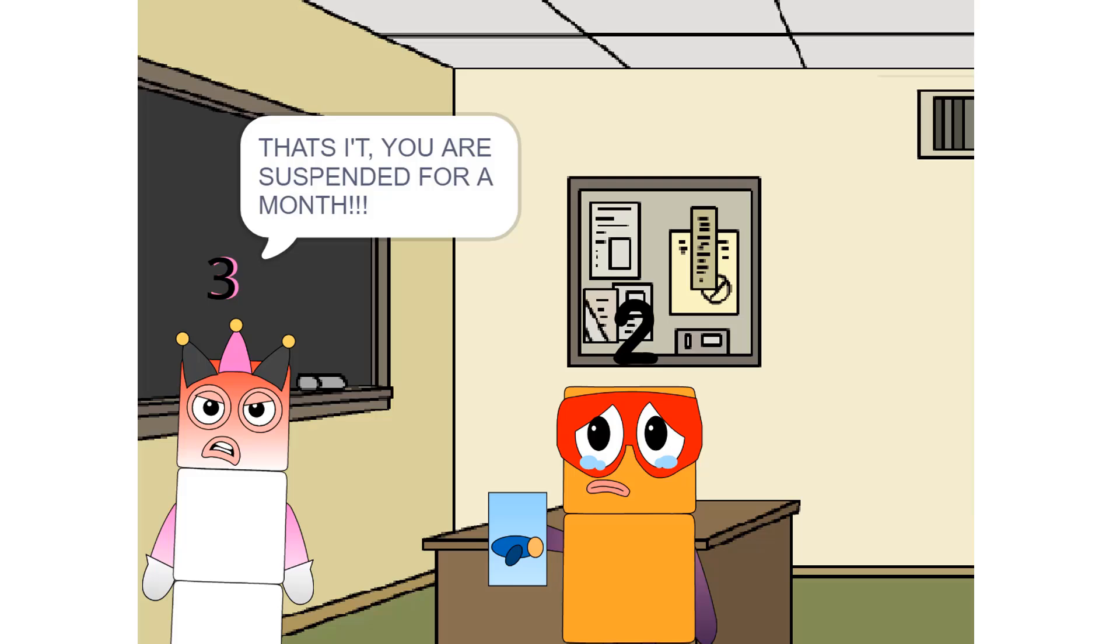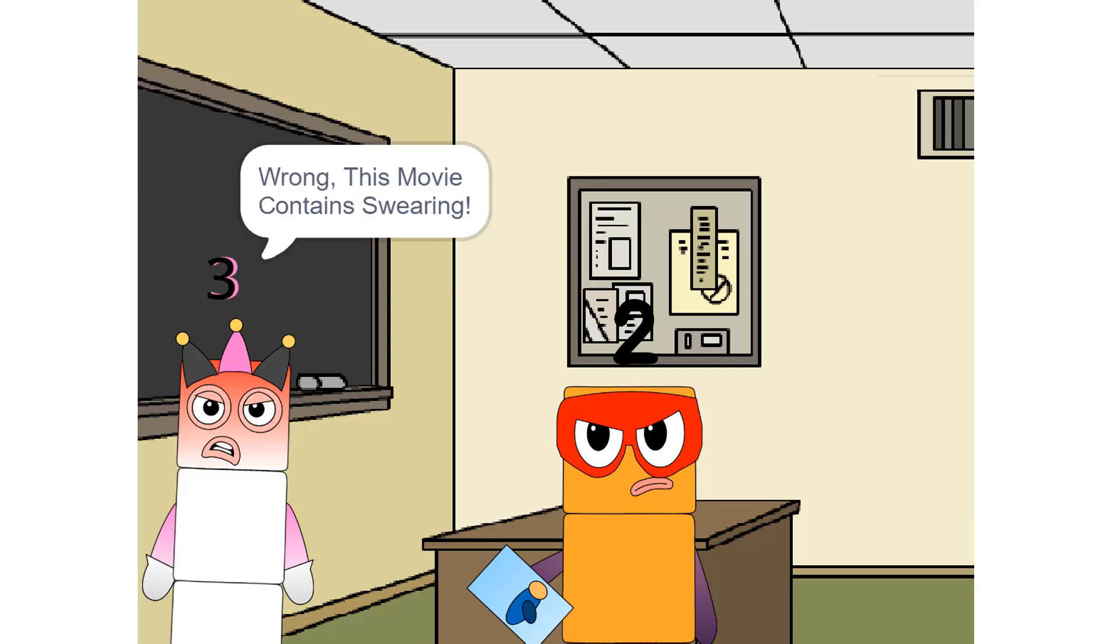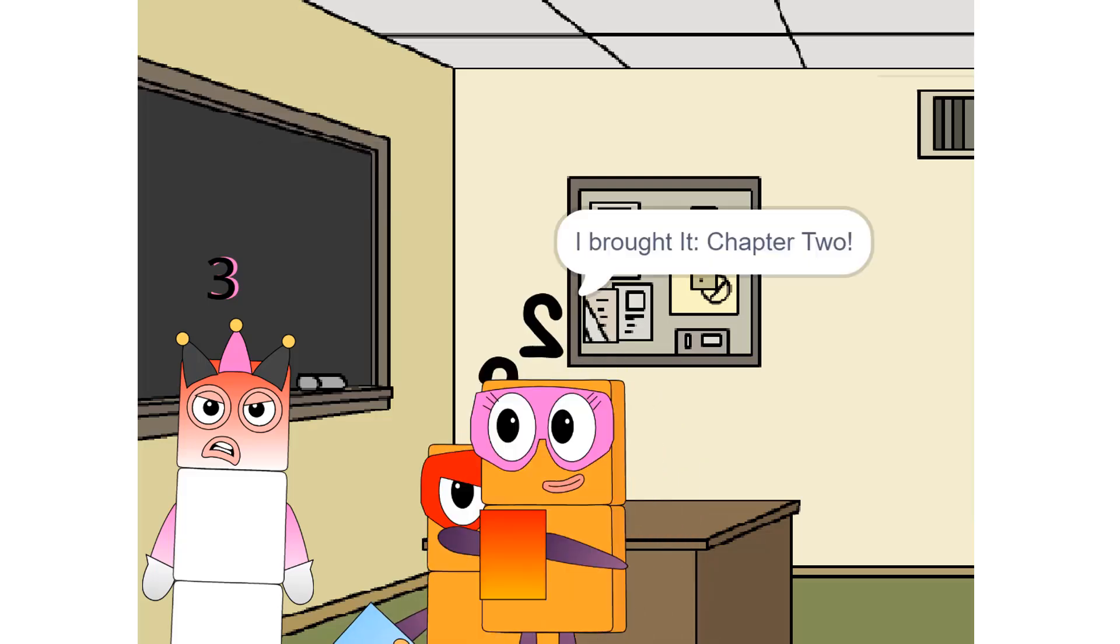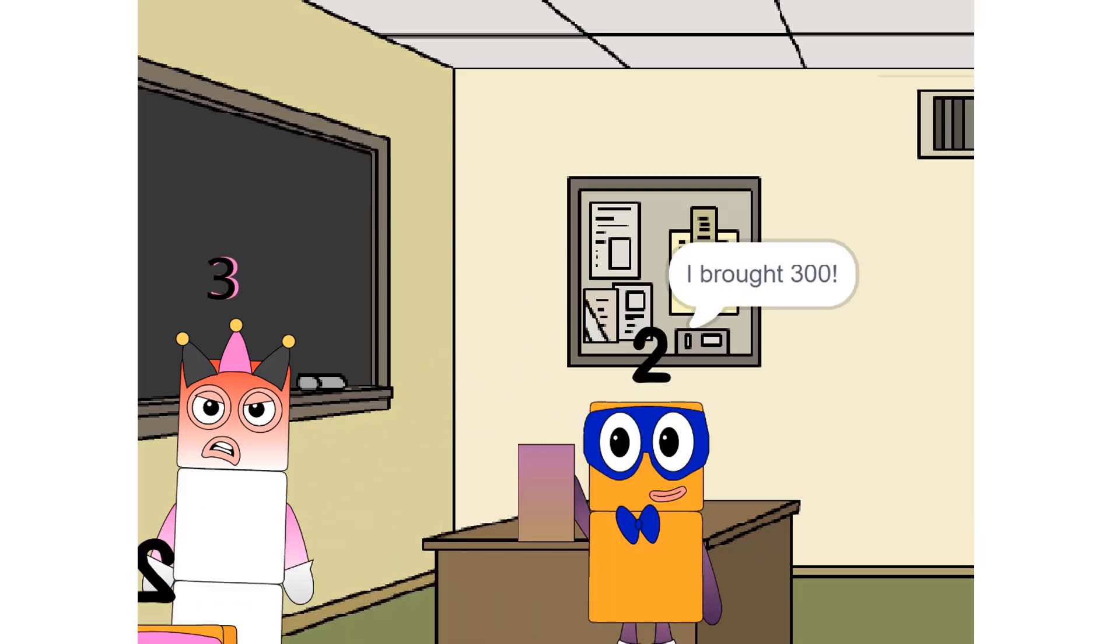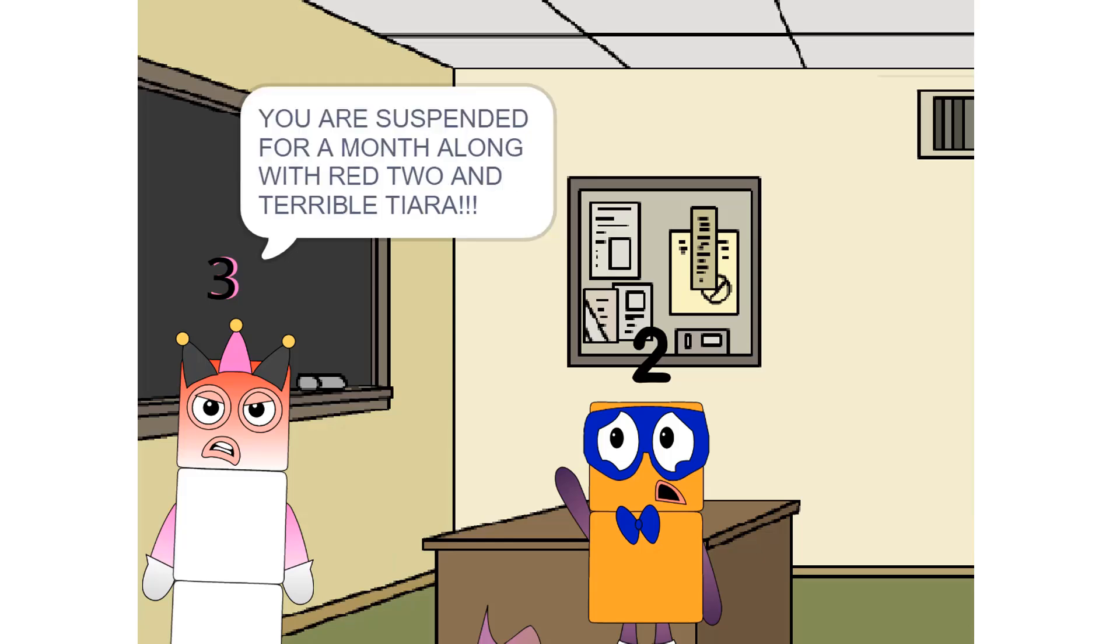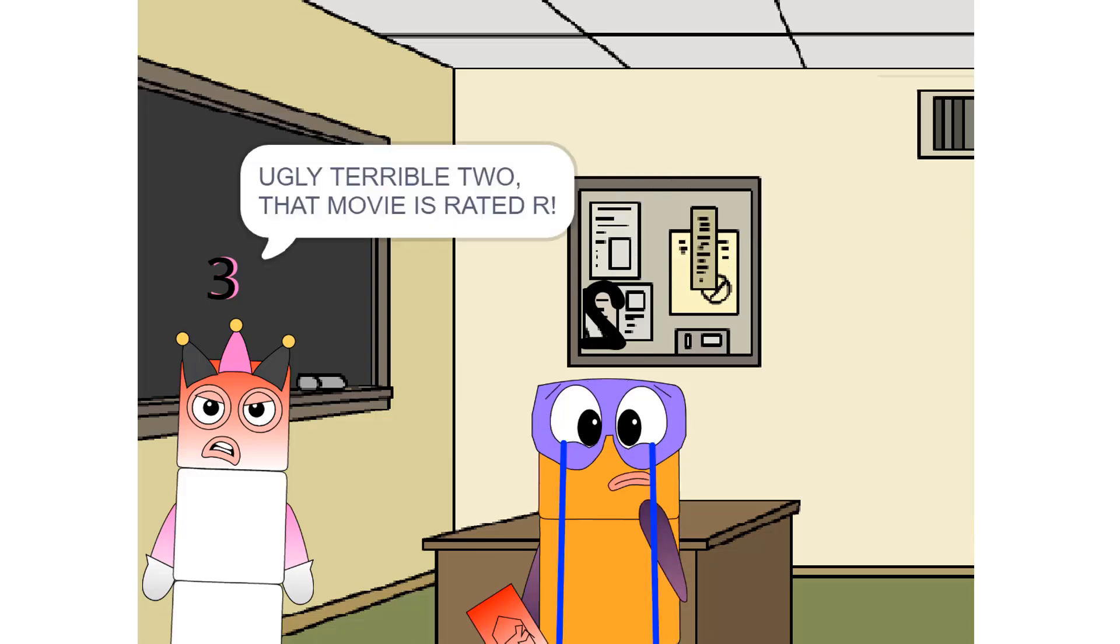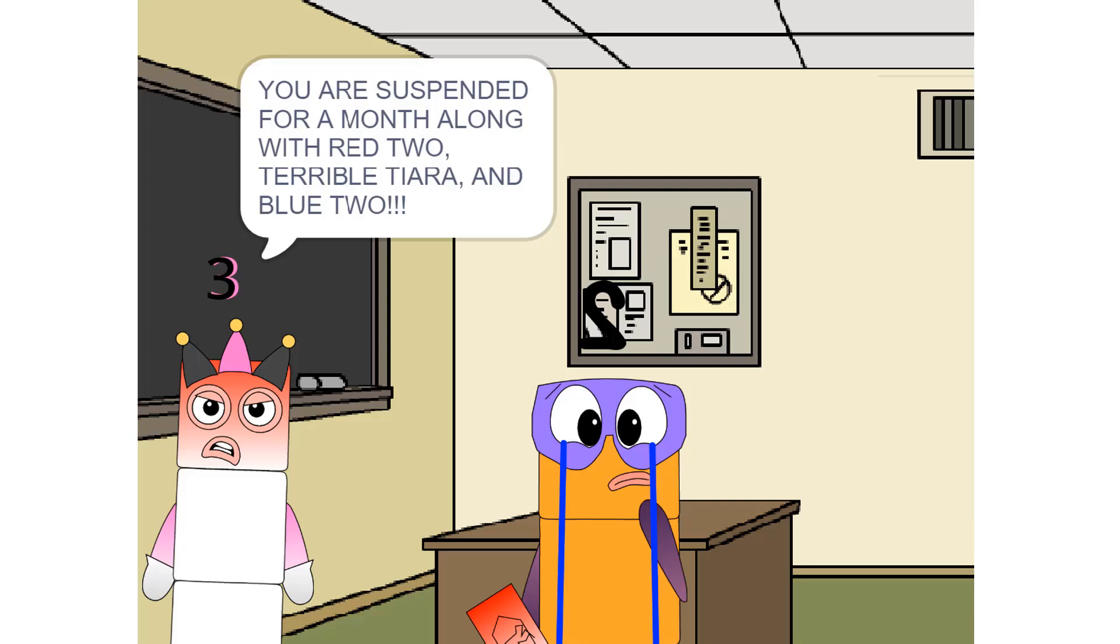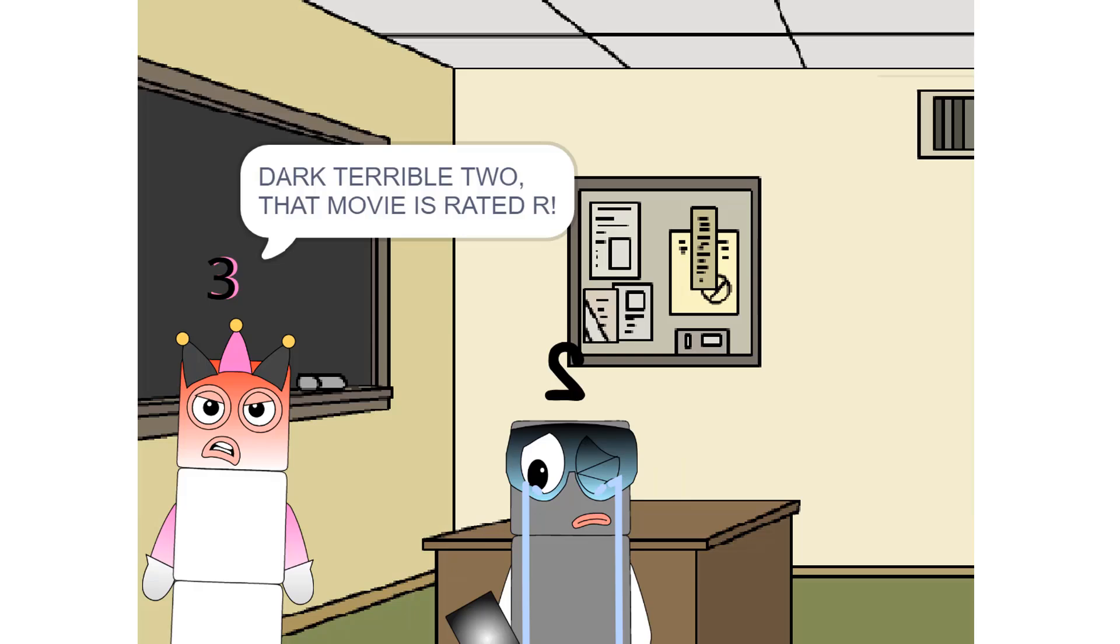I brought Sausage Party. Red 2, that movie is rated R. That's it, you are suspended for a month. Go home. Wait, I thought that was a kid's movie. Wrong, this movie contains swearing. Now go home before I whip you. I brought It Chapter 2. Terrible Tiara, that movie is rated R. You are suspended for a month along with Red 2. Go home right now. I brought 300. Blue 2, that movie is rated R. You are suspended for a month along with Red 2 and Terrible Tiara. Go home right now. I brought South Park Bigger, Longer, and Uncut. Ugly Terrible 2, that movie is rated R. You are suspended for a month along with Red 2, Terrible Tiara, and Blue 2. Go home right now.